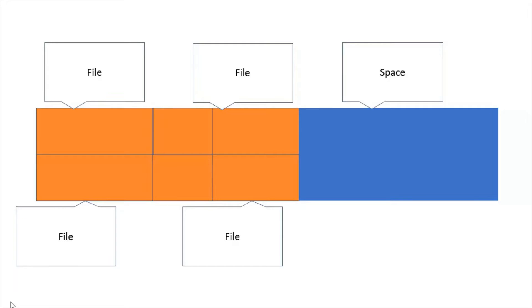We can see that we've nearly got half the disk still left over to save our files on, which makes much more efficient use of the space. This is what we call fragmentation, and the utility software — defragmentation — allows us to get around this.